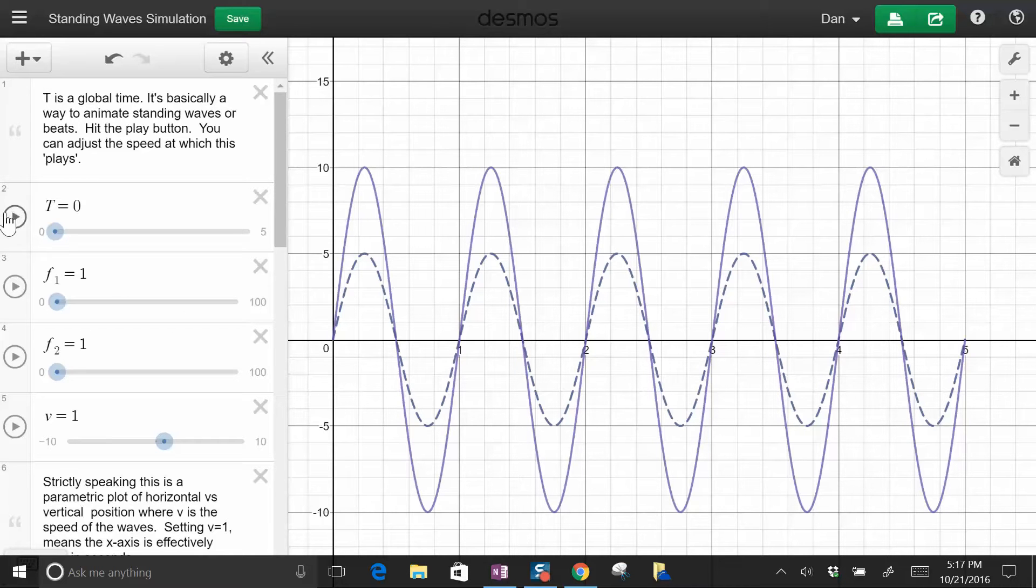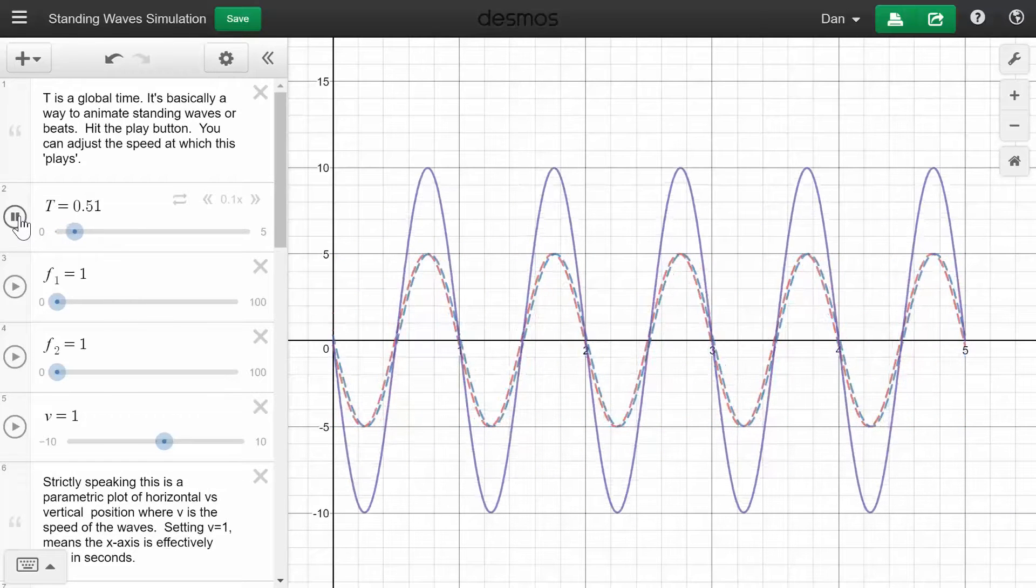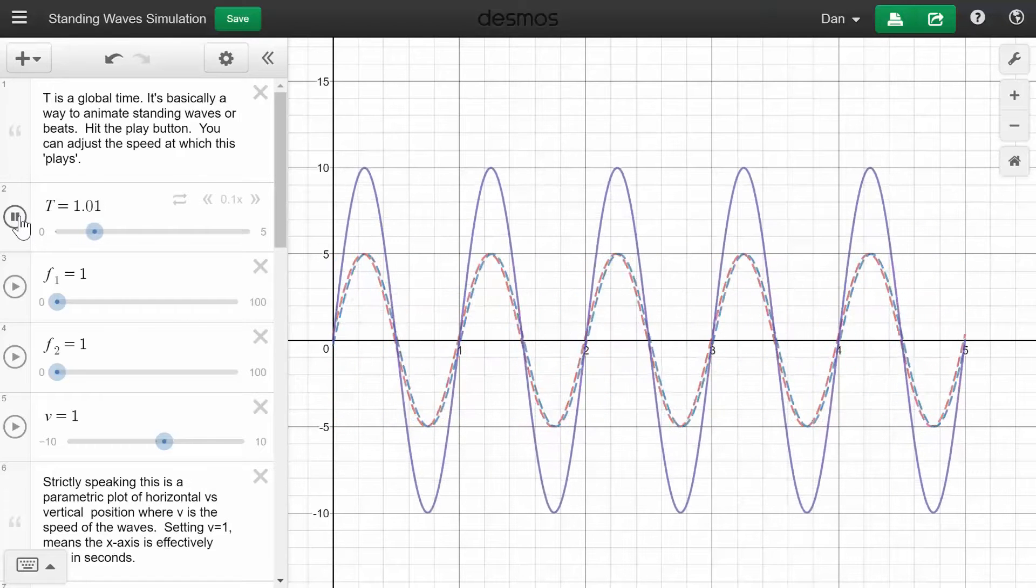So I'm going to hit play on this. I'll explain what it is in a second. Let's see what happens. So you can see the red wave's going to the left, the blue going to the right, and the purple is the superposition, the adding of both of those.